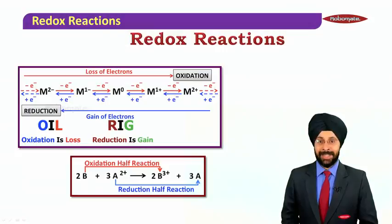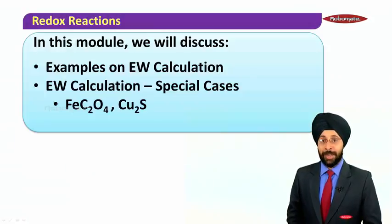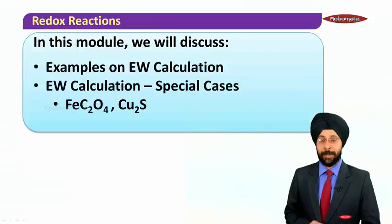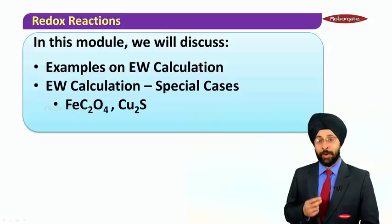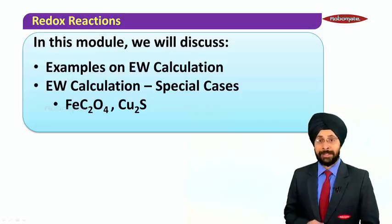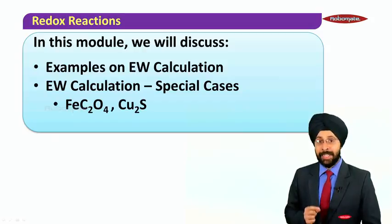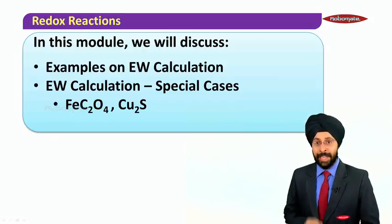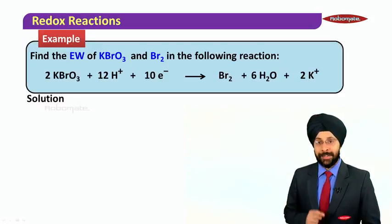Hello students. Let us continue our discussion on redox reactions. In the last module we were discussing calculation of equivalent weights of oxidizing agents and reducing agents, and we also defined a very important term: the Z-factor. Today we will continue with some examples on equivalent weight calculation, and then we will see two special cases: FeC2O4 and Cu2S. Let us start with some examples.